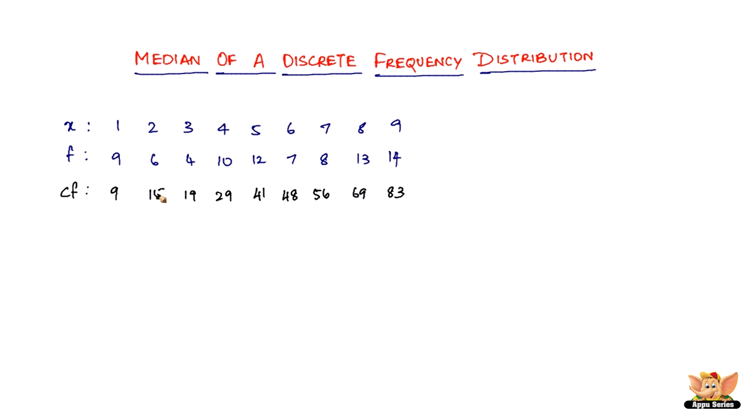Next, you need to find the sum of all the frequencies. If you add them all up, you get 83. This is called N. Now divide this by 2, so N/2 = 83/2 = 41.5.